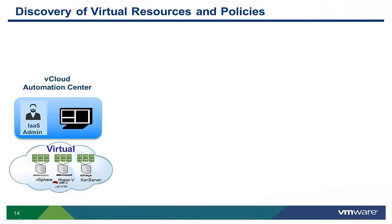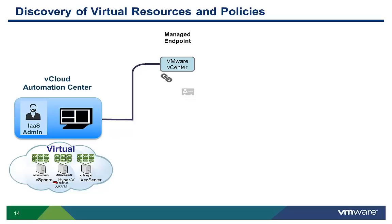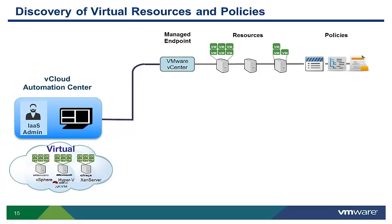For example, on VMware vSphere, vCloud Automation Center would discover and manage through vCenter. To enable management, the vCenter administrator adds the managed endpoint with the appropriate location and credentials required to access each vCenter instance. This information is stored encrypted in the Automation Center repository. Once the vCenter management endpoint is defined, vCloud Automation Center initiates ongoing discovery to identify the available physical resources, virtual machines, and their associated policies like clone templates, customizations, specifications, as well as network and storage configurations.